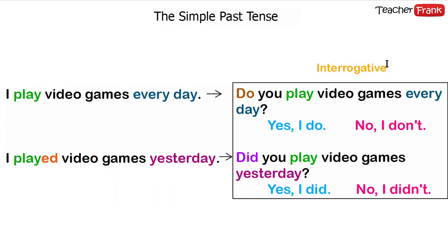Now let's see the interrogative form. Look at this affirmative phrase in the present: "I play video games every day." To transform this into a question, you use "do": "Do you play video games every day?" — "Yes, I do" or "No, I don't." In the simple past tense, you do the same thing, but you change the auxiliary verb "do" to "did": "Did you play video games yesterday?" — "Yes, I did" or "No, I didn't." Important: after "did", the verb is always in the present form.